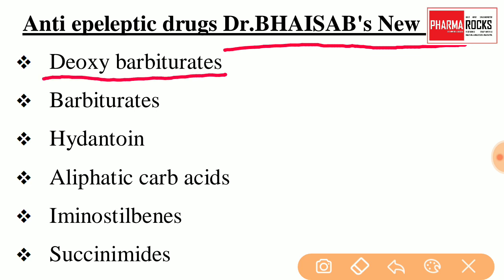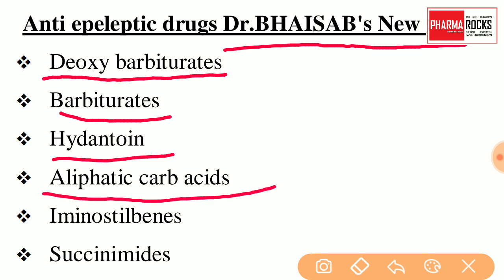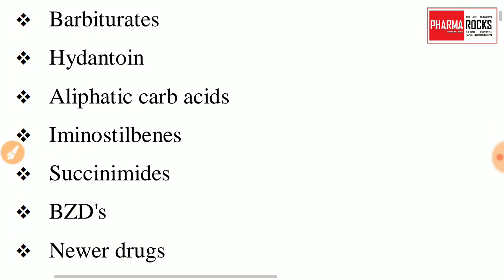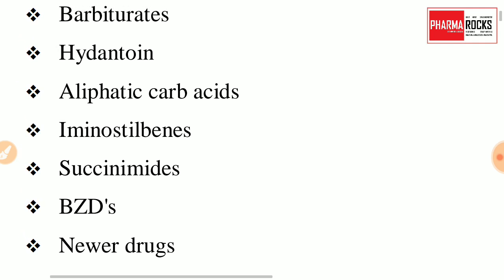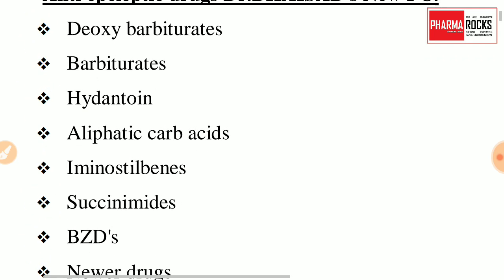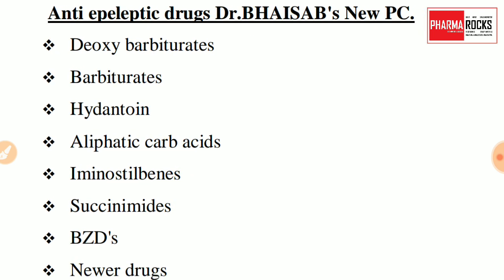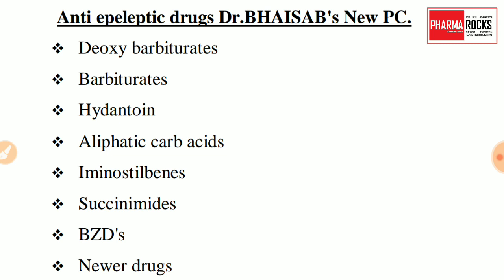D stands for Deoxybarbiturates. B stands for Barbiturates, H stands for Hydantoin, A stands for Aliphatic Carboxylic Acid, I stands for Iminostilbenes, and S stands for Succinimides. Next, B stands for Benzodiazepines and N stands for Newer Drugs. So using this trick you can remember Anti-Epileptic Drugs as 'Dr. Biceps New PC'.